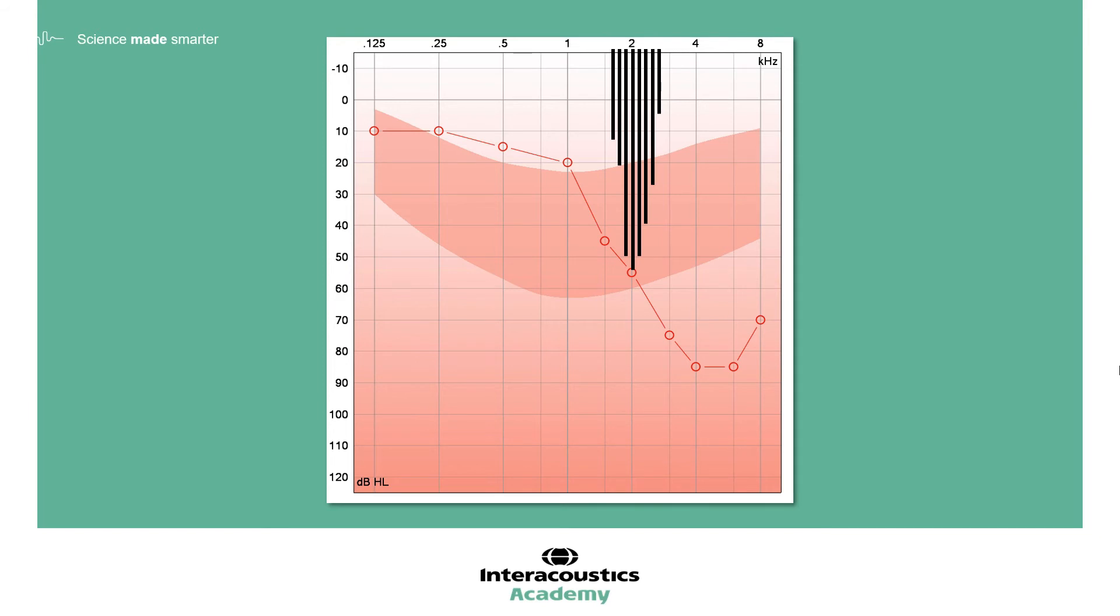As we can see in this sloping hearing loss example, the stimulus isn't going to be stimulating the normally hearing region of the basilar membrane. This gives us more certainty and more accuracy in exactly what is being tested, while still providing a more interesting and engaging stimulus for the child compared with a pure tone or warble tone.